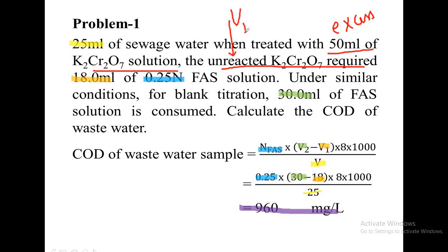Since it involves unreacted potassium dichromate, it is a back titration, so V1 is 18 ml. A blank titration value is also given, done with distilled water, so that is V2. V2 is always greater than V1. For V2, 30 ml of FAS solution is consumed, so V2 is 30. So V1 is 18 ml, V2 is 30 ml, V is 25 ml, and normality of FAS is 0.25.